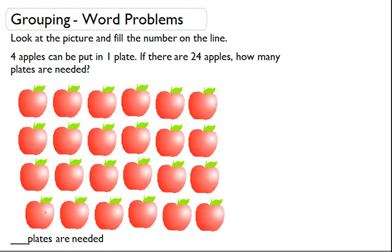One, two, three, four is one group. So I'm going to circle that group so I know that's going to be actually one plate. So again, I'm going to do that for every group of four I see.